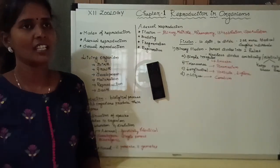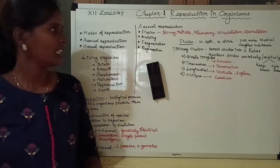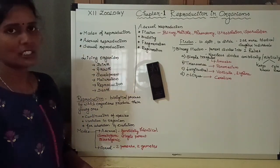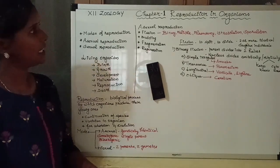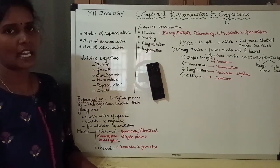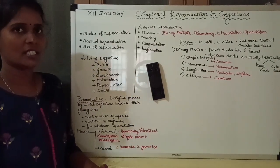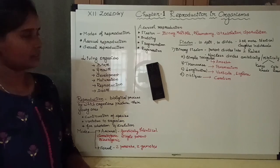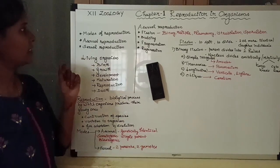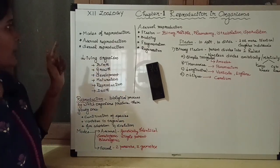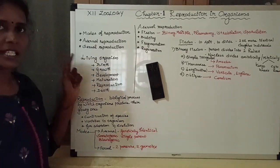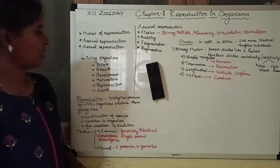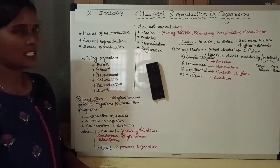Hello friends, welcome to our channel. This is 12th Zoology Chapter 1: Reproduction in Organisms. Let's discuss this chapter. The outline covers the modes of reproduction: asexual reproduction and sexual reproduction.